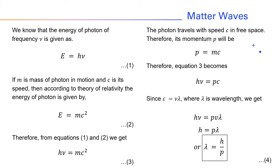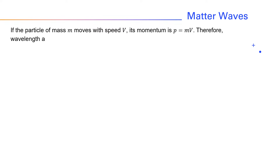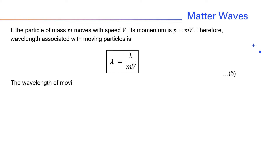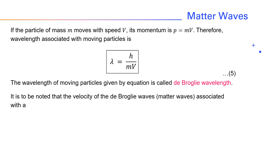De Broglie put forward his hypothesis that this equation for the photon can be applied to moving particles also. If a particle of mass m moves with speed v, its momentum p is mv. Therefore, the wavelength associated with a moving particle is λ = h/mv. The wavelength of moving particles given by this equation is called the De Broglie wavelength. It is to be noted that the velocity of the De Broglie waves or matter waves associated with a moving particle is not necessarily the velocity of the particle.